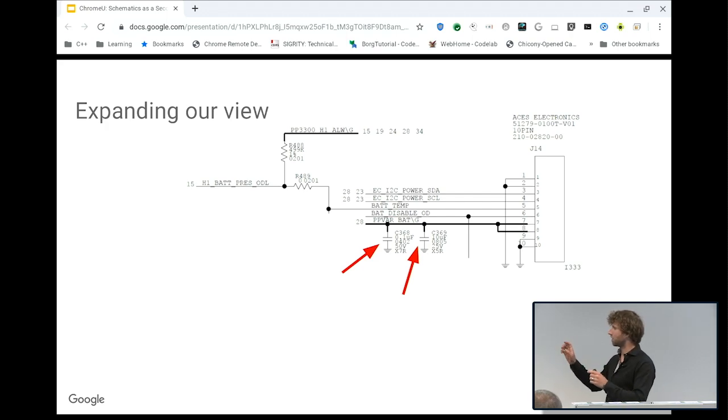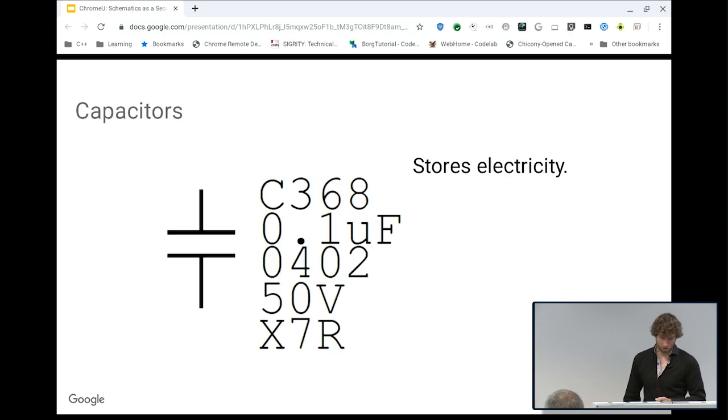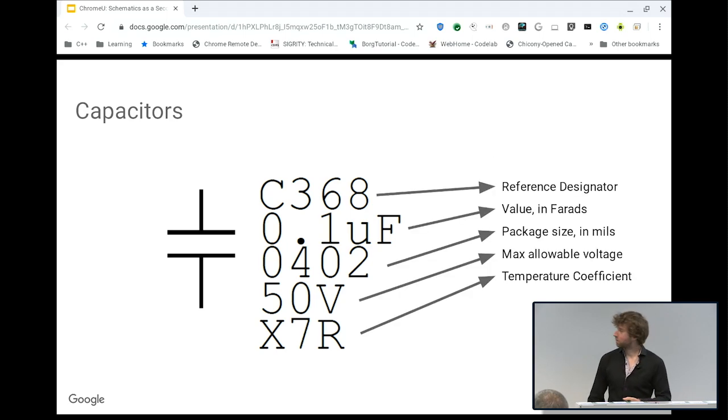Now let's expand our view. There's these little bar looking things down there, those are capacitors. Their sole purpose in life is to store energy for later. Reference designator starts with a C and then some number. The values in farads. The package size is 0402, slightly bigger. 50 volts is the maximum you can put through this capacitor before it explodes. And the temperature coefficient is something you can completely ignore.